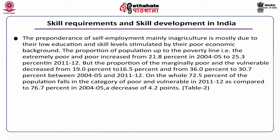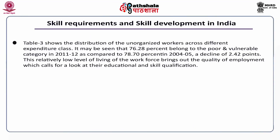The proportion of the marginally poor and the vulnerable poor decreased from 19% to 16.5% and from 36% to 30.7% between 2004-05 and 2011-12. On the whole, 72.5% of the population falls in the category of poor and vulnerably poor in 2011-12, as compared to 76.7% in 2004-05, a decrease of 4.5%. It can also be seen that around 76.28% of unorganized workers belong to the poor and vulnerable category in 2011-12, compared to 78.7% in 2004-05, a decline of 2.4%.